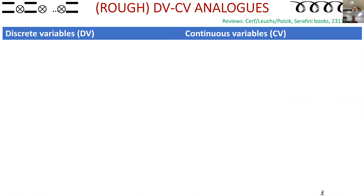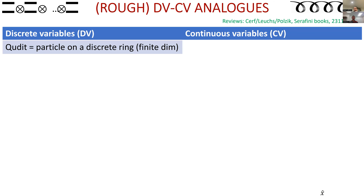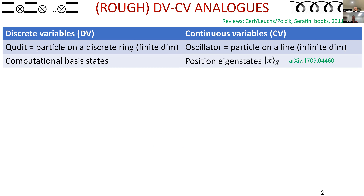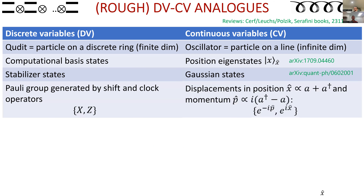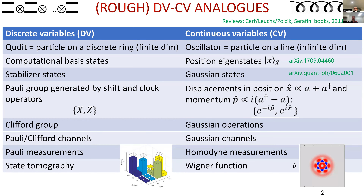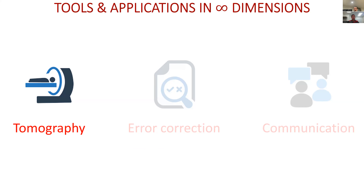For those not so familiar with continuous variables, there are analogs from the qubit world. If you think of a qubit as a particle on a discrete ring, then an oscillator is a particle on a line. It's this euphemism for these types of state space. Basis states can be thought of as position states analogously in the oscillator. There are all sorts of different analogs for things familiar in the qubit world that exist in the oscillator world. This field is very old — since the 1920s.